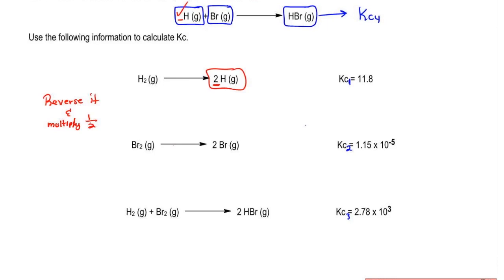Remember, dividing by 2 is the same thing as multiplying by a half. Now, our equation becomes H gas gives me half H2 gas. When we reverse it, K becomes 1 over 11.8 and because we multiplied by a half, half becomes the power. And just remember, half power really means square root.